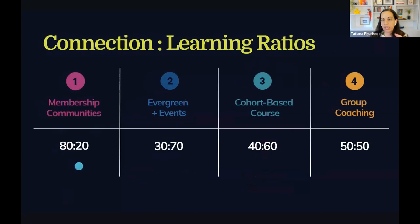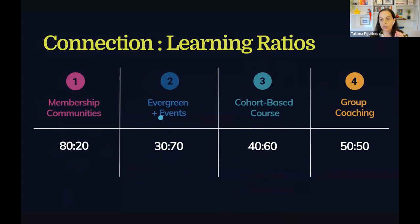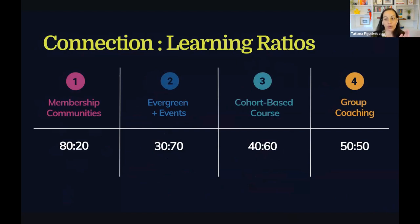A membership community in general is like 80-20 — much more on the connection side, a little bit of learning. If you're hosting an evergreen plus events structure for your community business, it's the opposite: 30% connection, 70% learning. These are just baselines, but yours can be very specific to you — it can be like 25-75, depending on exactly how your community functions.